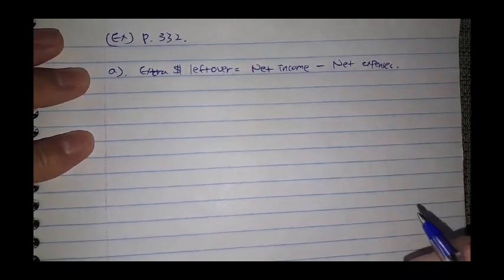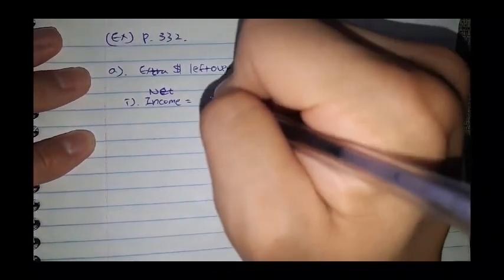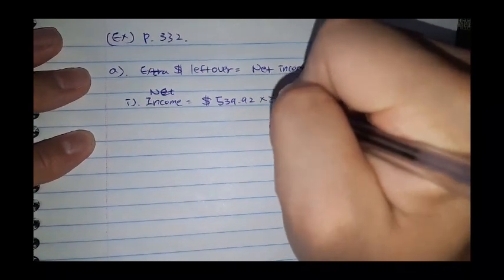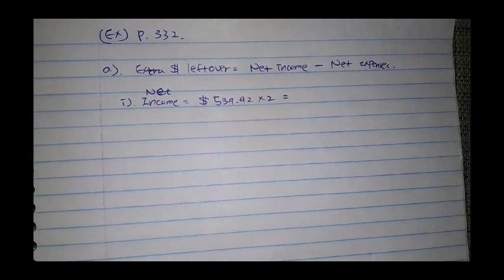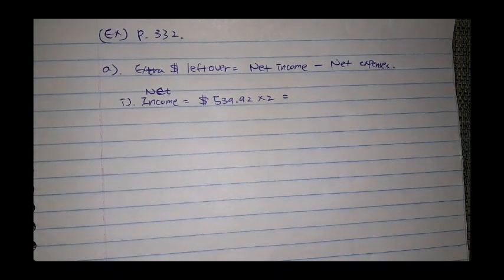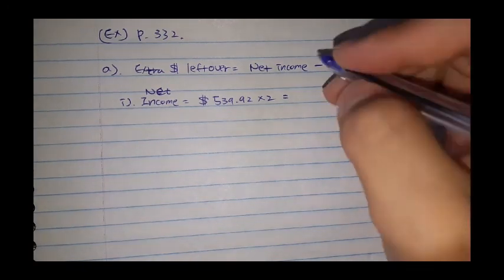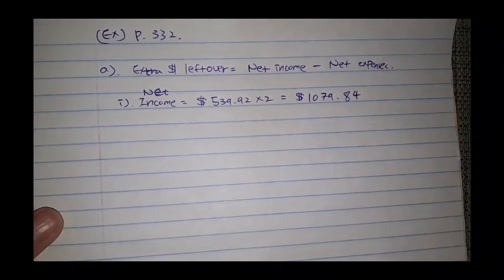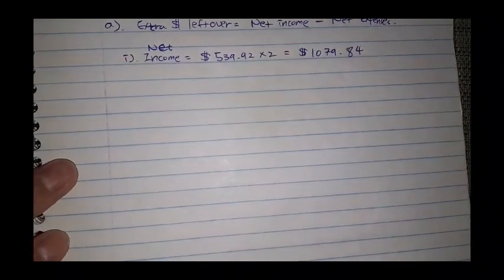So we got to do that first. Let's do net income first. If you think about net income, he has two, which is $539.92 multiplied by 2 because you receive twice for that amount. So prepare your calculator. $539.92 multiplied by 2 becomes $1079.84. That is a net income.